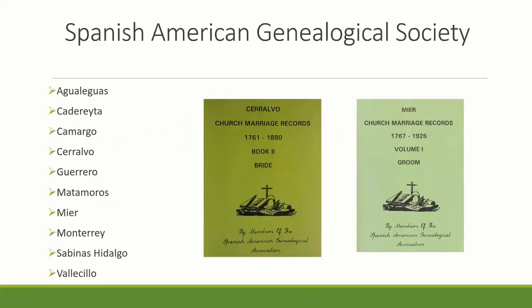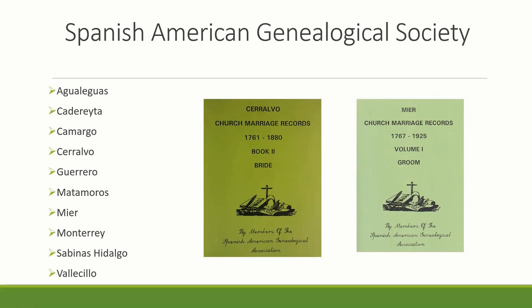Now, index books and websites. The Spanish American Genealogical Society has indexed a lot of church records, and many of these indexes are available on FamilySearch. But for my area, for example, Guerrero — FamilySearch has not indexed those church records, so that's where these type of books come very handy. This is for Nuevo León, Tamaulipas, and Coahuila. If your ancestor is from any other part of Mexico, do some research and see if there are any books that have indexed records for that particular area.